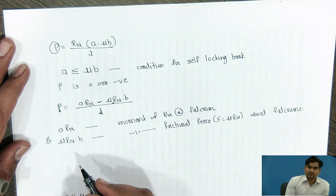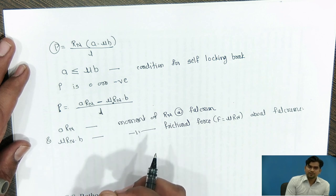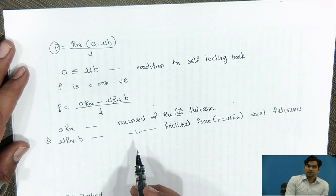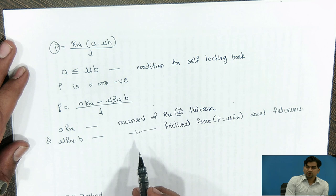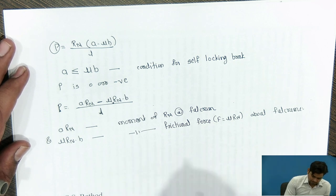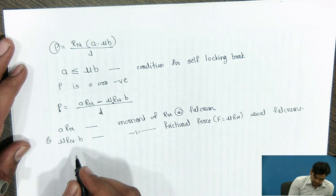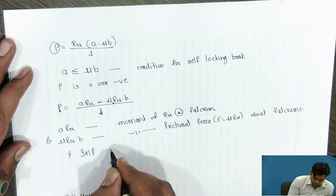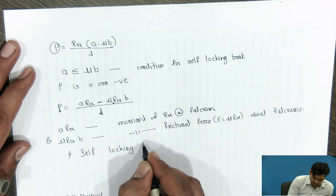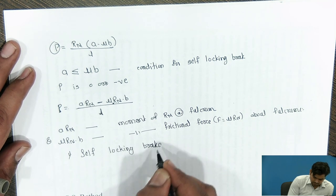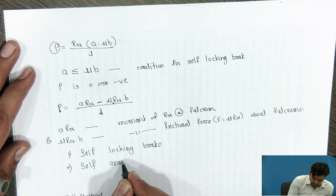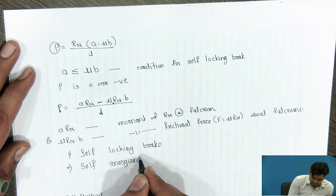In actual practice, the brake should be self-energized and it should not be a self-locking brake. So we have seen the two types: first, the self-locking brake, and second, the self-energized brake.